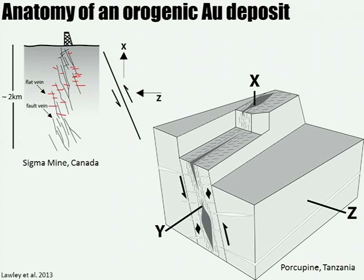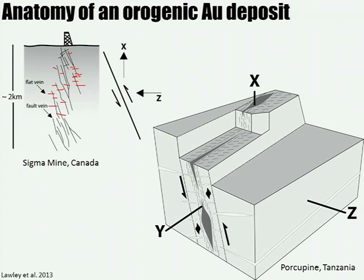My idea was to unravel the hydrothermal and deformation history. The approach was: sample the mylonitic shear zone and date it, then date the vein that fills that shear zone — the fault-fill vein — and then date the extension veins. We tried to use these different vein styles as records of instantaneous strain to reconstruct the hydrothermal and deformation history.